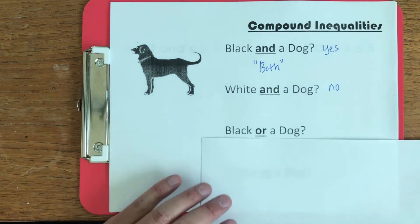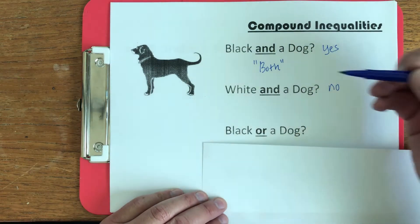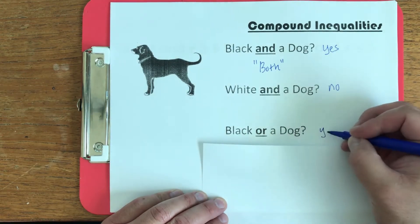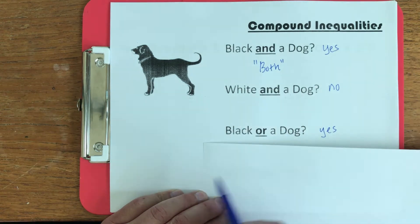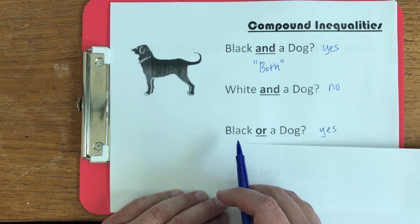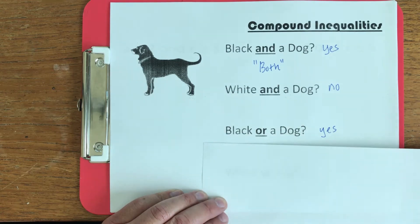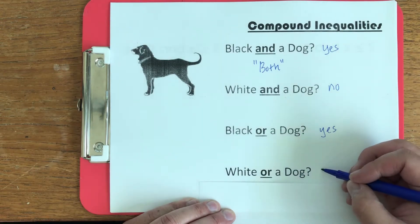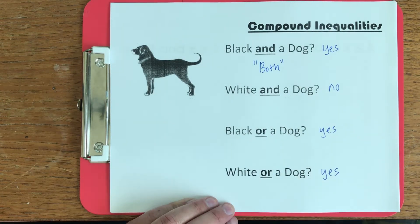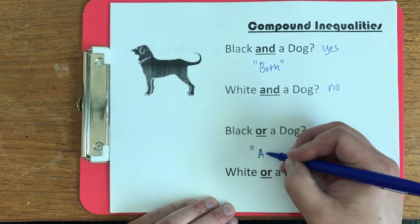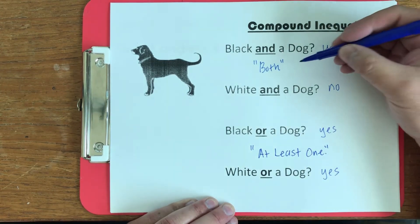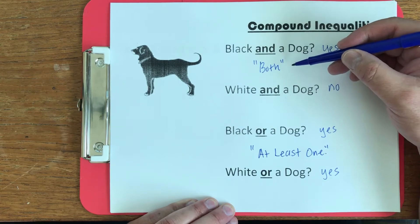We can contrast that with the logical operator OR. In this picture, do we see something black or a dog? The answer would be yes, because you only have to be one of these things — at least black or a dog. Do we see something white or a dog? The answer also would be yes. So whenever we use the word OR, it means at least one, whereas AND means both things have to be true.